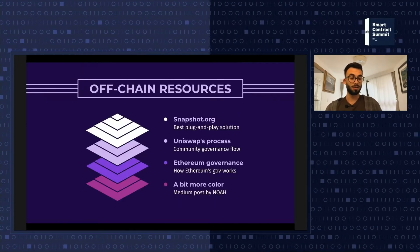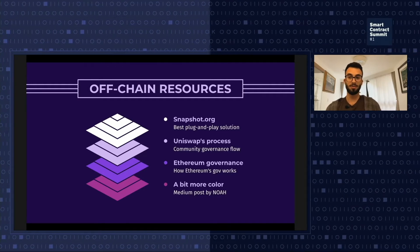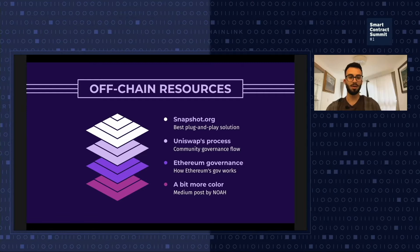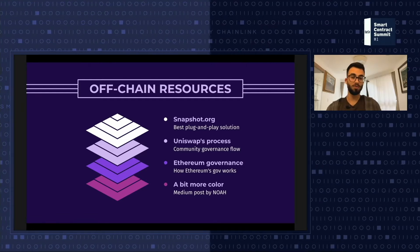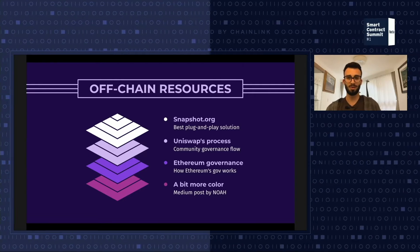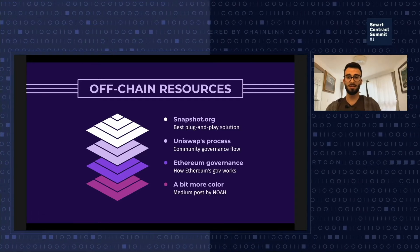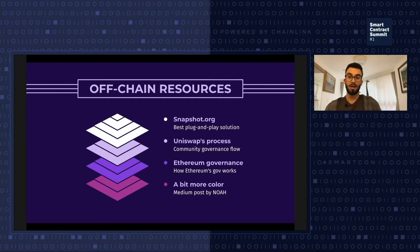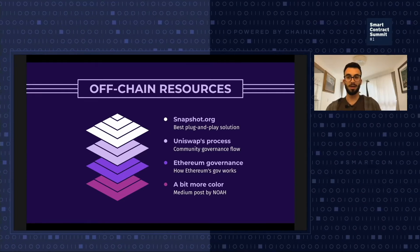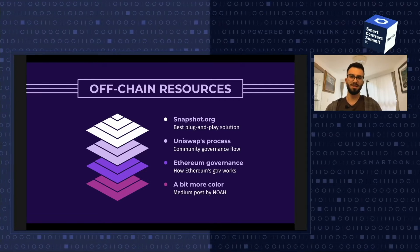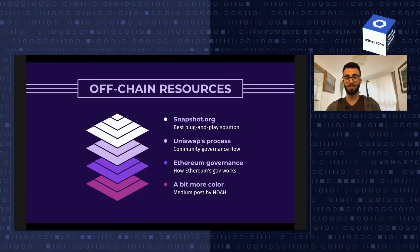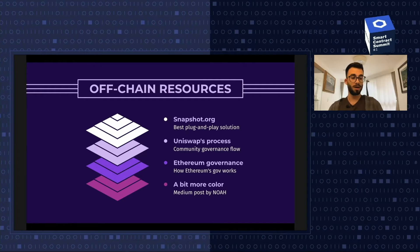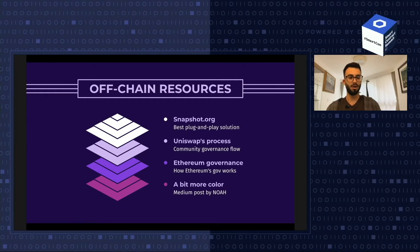Some good resources for off-chain governance: snapshot.org is definitely the best plug-and-play integration for any token so holders can vote on decisions — used by giants like Uniswap. I've also linked a post about Uniswap's governance process, which shows that off-chain doesn't mean simple. Ethereum governance is also worth studying for its fast development cycle and how EIPs work. And I've compiled a Medium post by NOAA that sheds more light into off-chain governance.